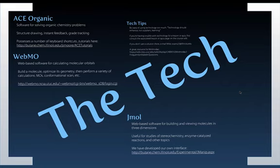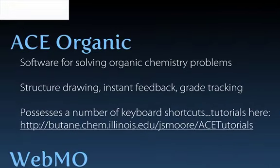The program you'll make most use of is called ACE Organic. It's a software program built around a Java-based chemical drawing engine called MarvinSketch, and basically it's software for solving organic chemistry problems. We've built hundreds of problems into ACE, and hundreds more came built in, and it allows you to get instant feedback and grade tracking along with answering problems.